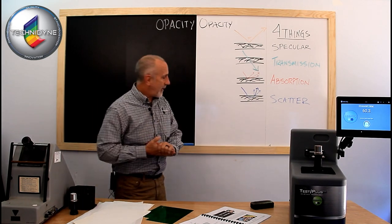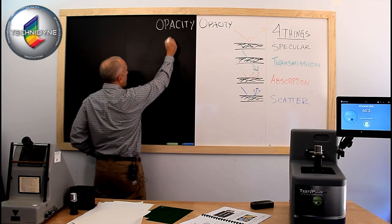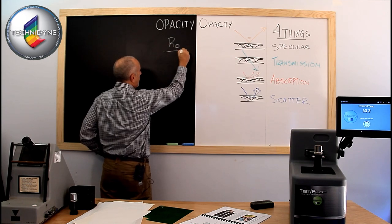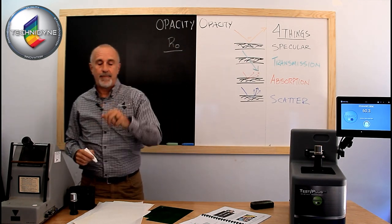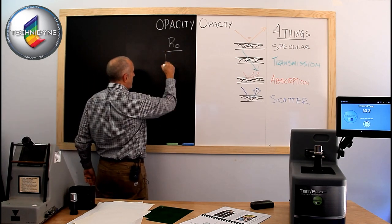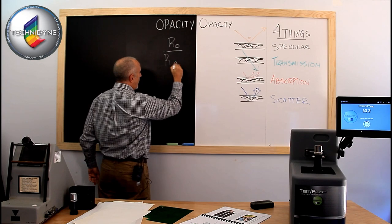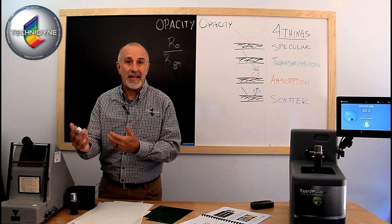So they came up with a calculation. So you would make a measurement, and you would get what they called R0. And R0 would be that single sheet of paper backed by the black cup. And you would then measure that same single sheet of paper when it's backed by the white backing, which had a reflectance of 89%. So they called that R89.